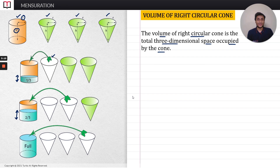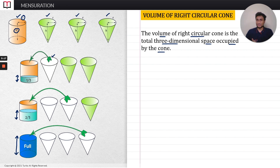Similarly, take the third cone and pour all the water inside it into the cylinder, and the water will get exactly filled inside the cylinder — nothing more, nothing less. It will get exactly filled.